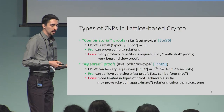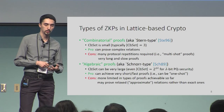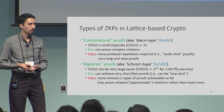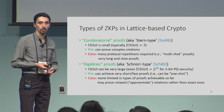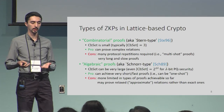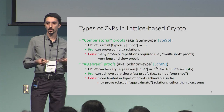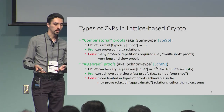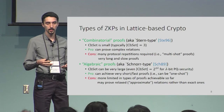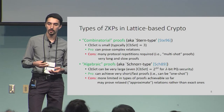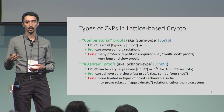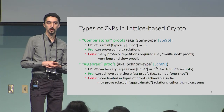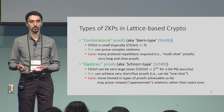In general there are two types of zero-knowledge proofs in lattice-based crypto. The first is combinatorial proofs, based on Stern's protocol, where the challenge set has only three elements. The advantage is you can prove very complex relations, but since the challenge set is small, you need to repeat the protocol hundreds of times to get negligible soundness error, resulting in very slow and very long proofs.